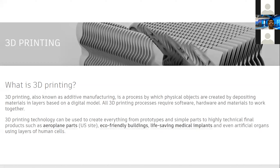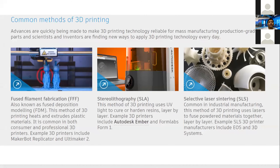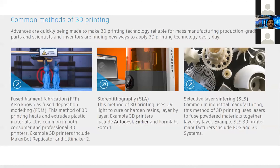The first method of 3D printing is called Fused Filament Fabrication, also called FFF or Fused Deposition Modeling — FDM. This method basically involves heating plastic and extruding it layer by layer. It is common in both consumer and professional 3D printers. Examples include the MakerBot Replicator and Ultimaker, which are commercially available printers.